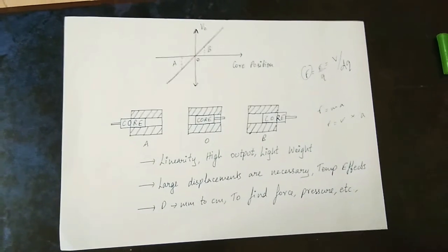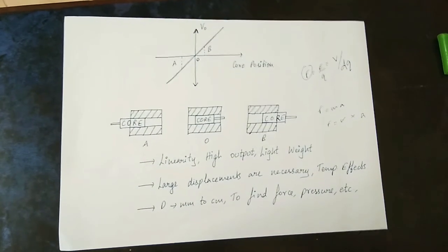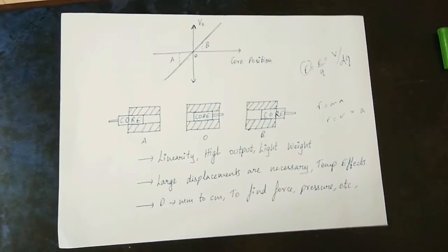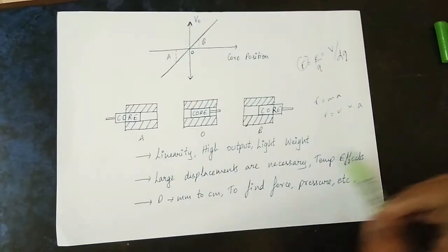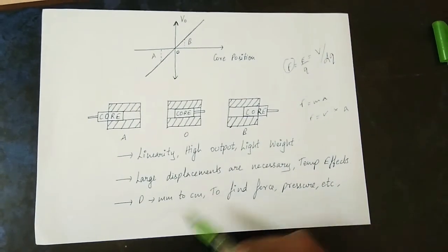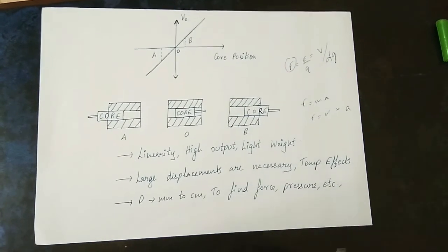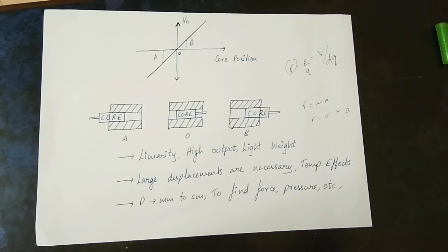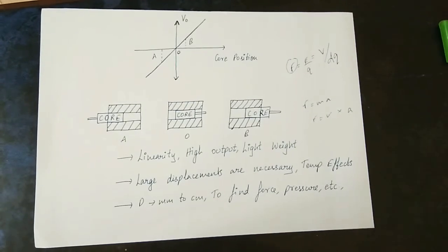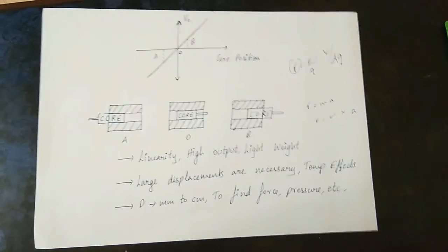If we use a transducer — physical quantity to electrical quantity — it will determine the physical quantity without mass and G value. This force is determined to determine the displacement. There are advantages: linearity, high output, and light weight. Large displacement can be used as a variation. We can measure force. A disadvantage is that when displacement is too low the output will be zero, and there is a temperature effect. Applications include determining force, pressure, stress, and velocity.